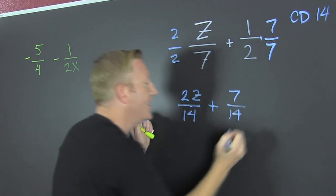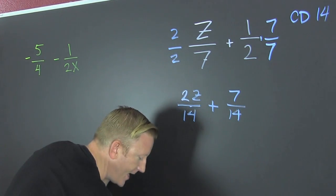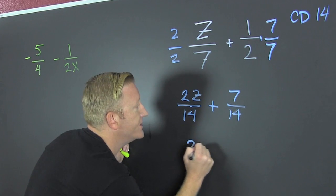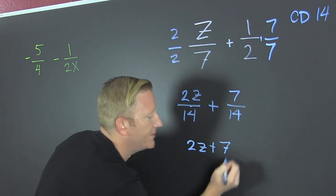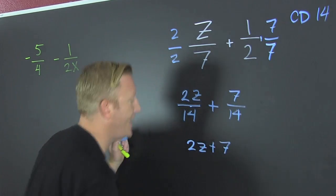That's 7 over 14. Now that I have common denomination, then I'm going to go ahead and I'm going to add their numerators, and I'm going to have a 2z plus 7 dress them up. Yeah, bow tie. Oh, you fancy, huh? This one too, this one too, yeah.